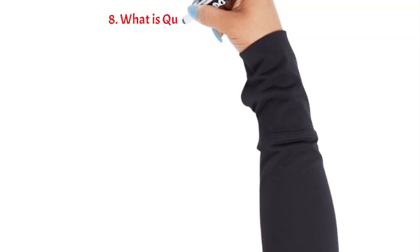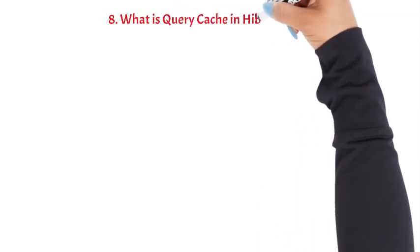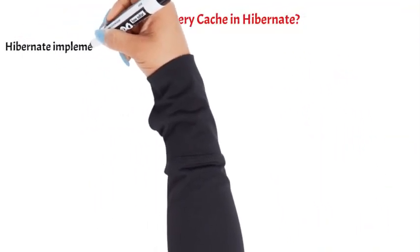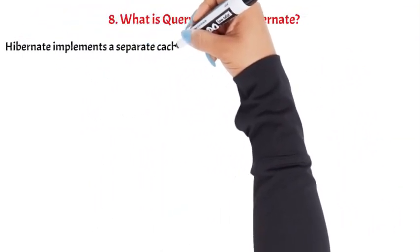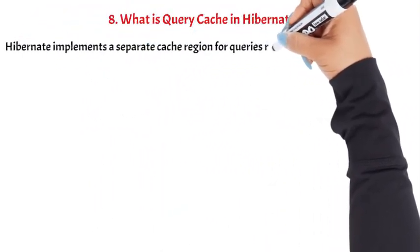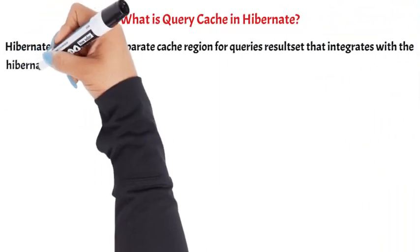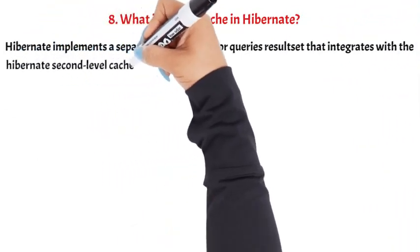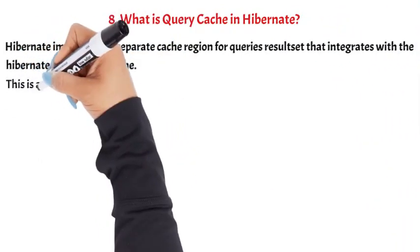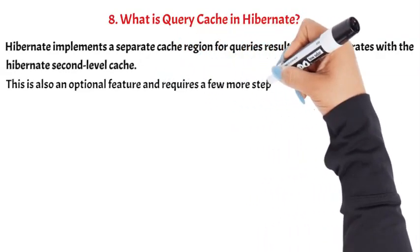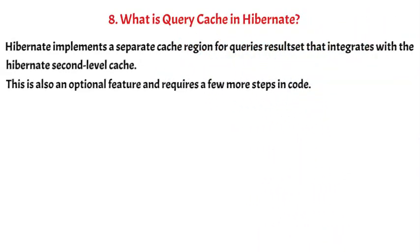Question 8: What is query cache in Hibernate? Hibernate implements a separate cache region for query result sets that integrates with the Hibernate second level cache. This is also an optional feature and requires a few more steps in code.